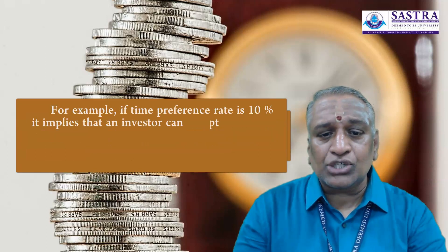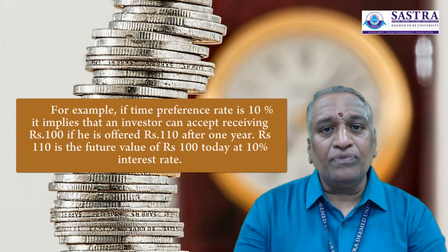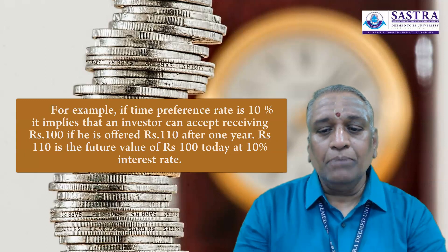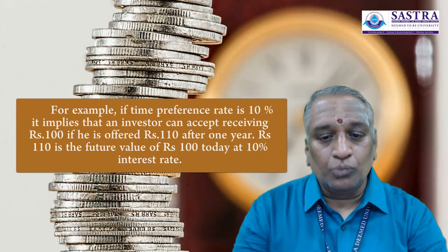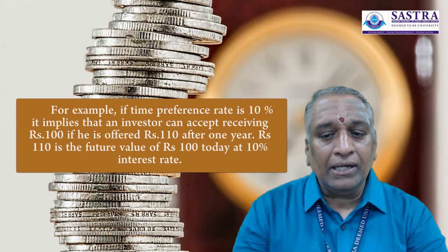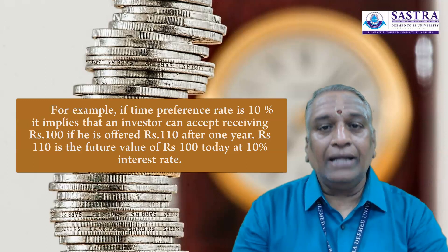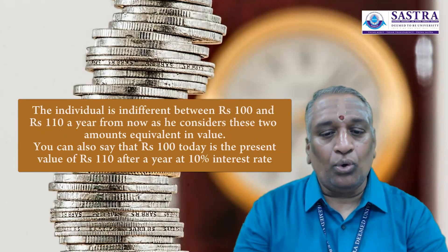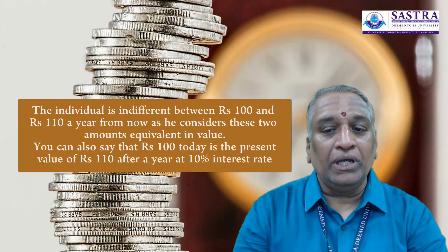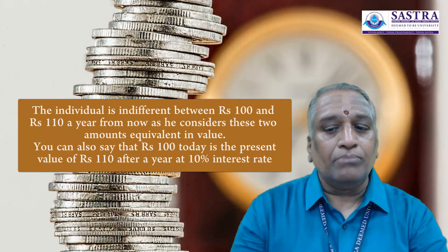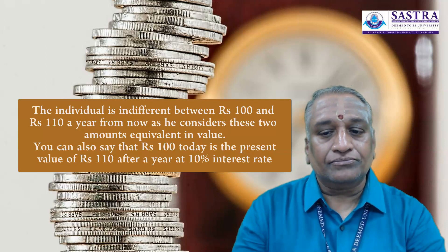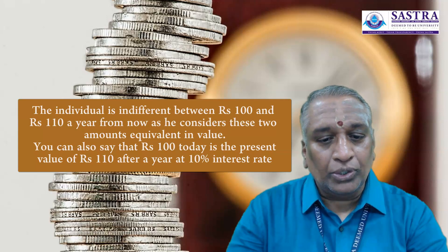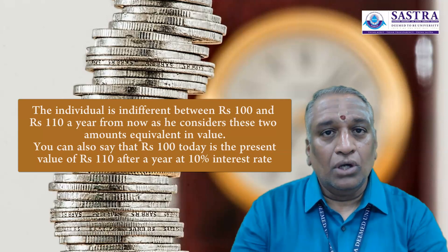Such an interest rate is called the risk-adjusted interest rate. For example, if the time preference rate is 10%, it implies that an investor can accept receiving rupees 100 if he is offered rupees 110 after one year. So, rupees 110 is the future value of rupees 100 today at 10% interest rate. Therefore, the individual is indifferent between 100 and rupees 110 a year from now, as he considers these two amounts equivalent in value. You can also say that rupees 100 today is the present value of rupees 110 after a year at 10% interest rate.